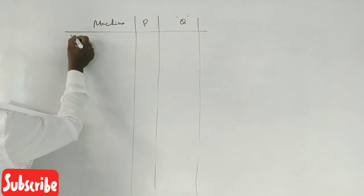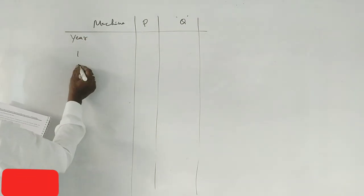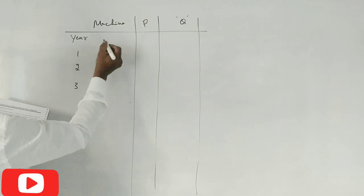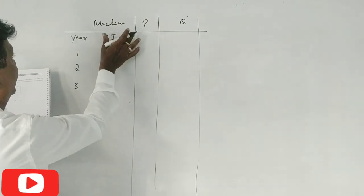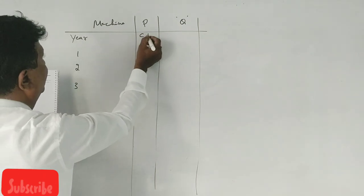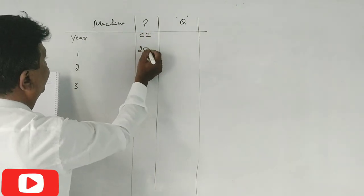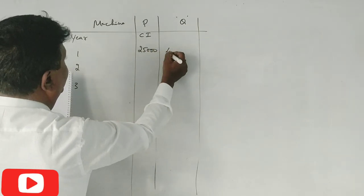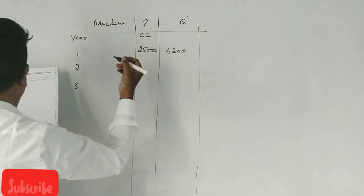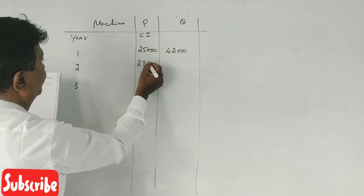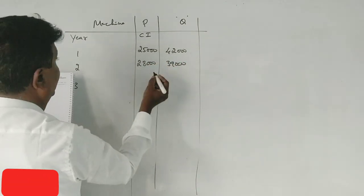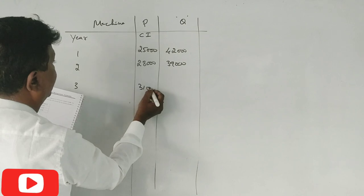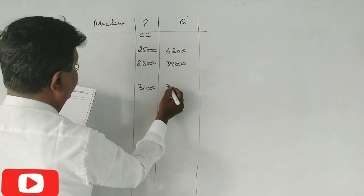First, the year: 1, 2, 3, okay? Cash inflow. So, 25,000 and 42,000, correct? 28,000 and 39,000. 31,000 and 36,000. Correct.